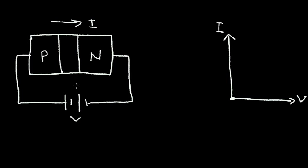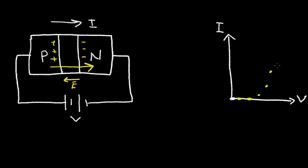As I increase this voltage, recall that we have a built-in E-field in this depletion region. And as I increase the battery voltage, I'm making this P region more positive relative to the N region. So, in effect, I'm canceling out this E-field that's built into the depletion region. As I increase this voltage, I move out here on the curve — I increase the voltage a little more — and I get a curve that looks something like this.